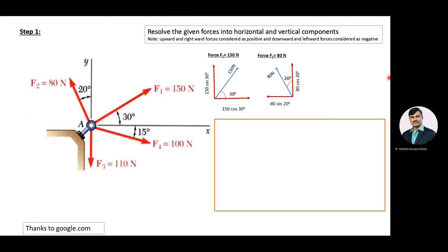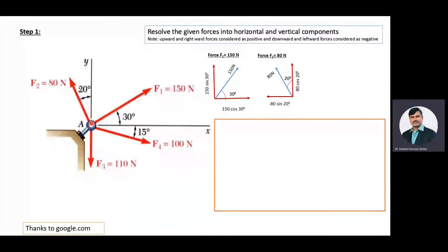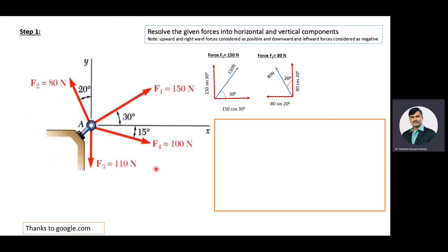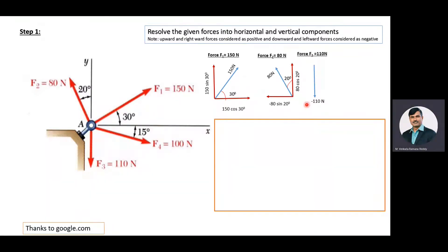Then we will resolve F3. Because it is acting vertically downward, its horizontal component is 0. Because it is vertically downward, this 110 newton force becomes a minus value — we are considering only the vertical component, whereas its horizontal component is 0. That's why it is minus 110 newton.